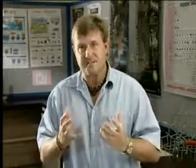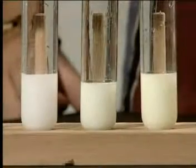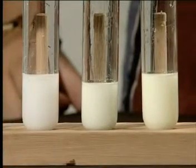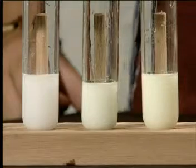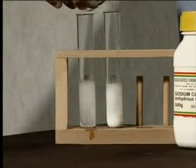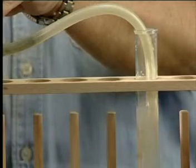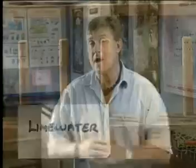In our previous lessons, we looked at different tests to identify the negative ions or anions. Do you remember the tests we used and the different anions that we tested for? We tested for halides — in other words, chlorides, bromides and iodides. We also tested for sulfates using barium chloride and dilute acid. And lastly, we tested for carbonates using dilute acid and clear lime water. Those were our tests for the anions.